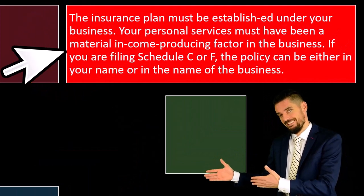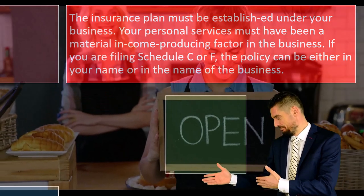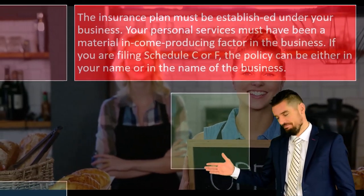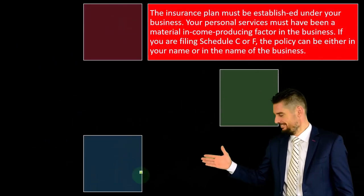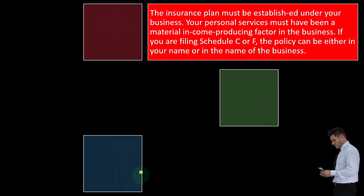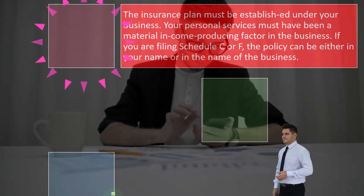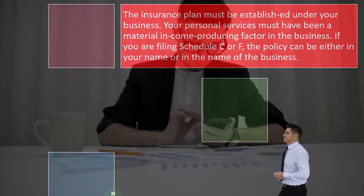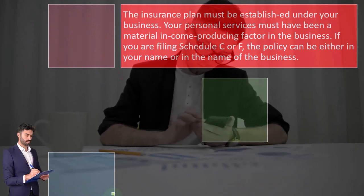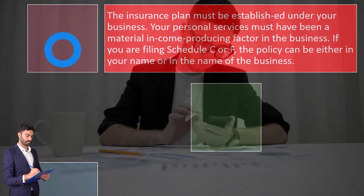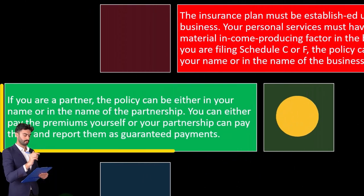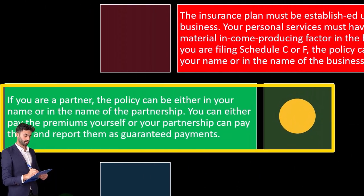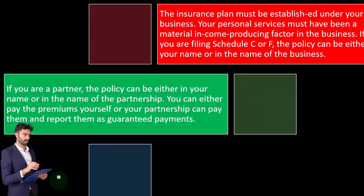The insurance plan must be established under your business, and your personal services must have been a material income-producing factor. If you're filing a Schedule C or F, the policy can be either in your name or in the name of the business. This gets a bit tricky if your sole proprietorship uses a different business name. For other entity types like an S corporation, make sure your health insurance is set up appropriately to qualify for the deduction.